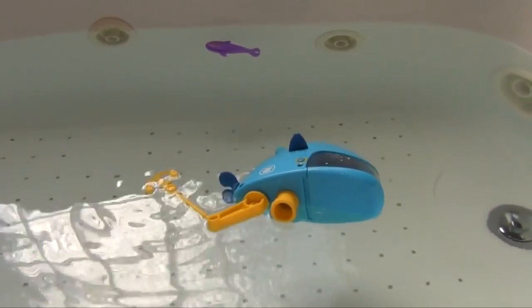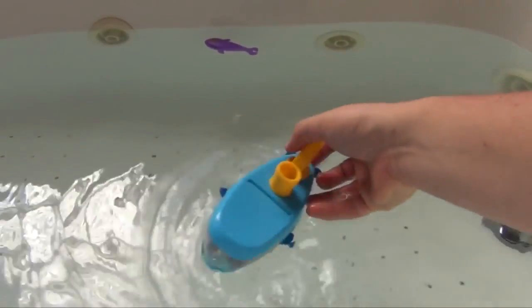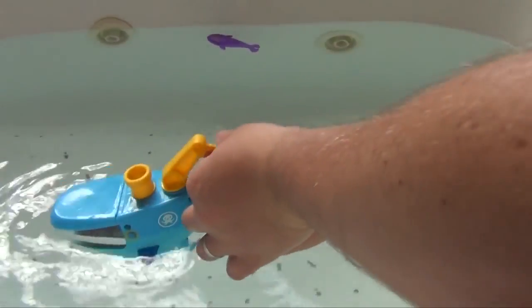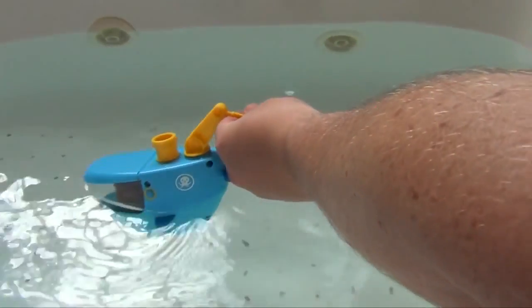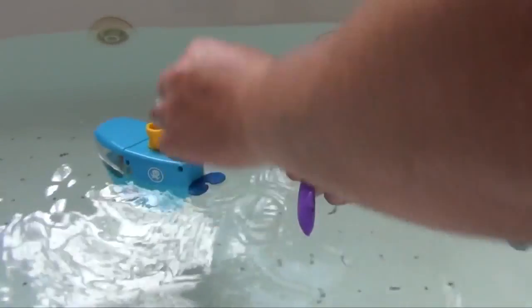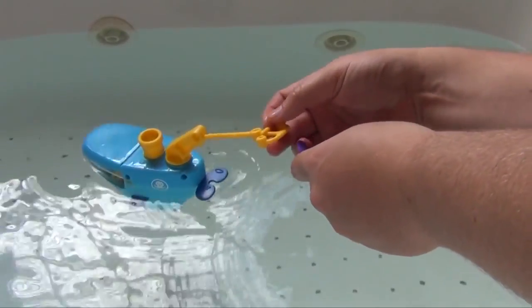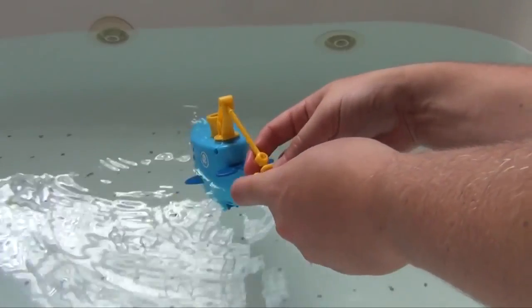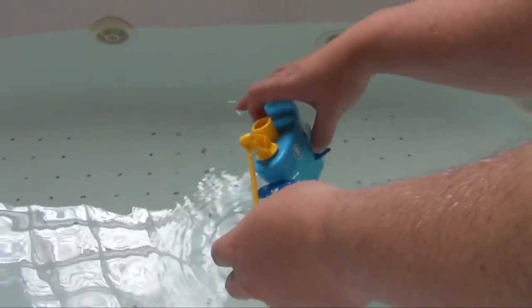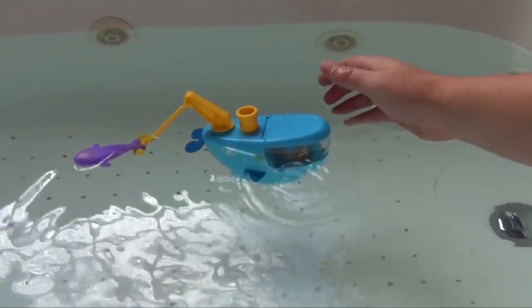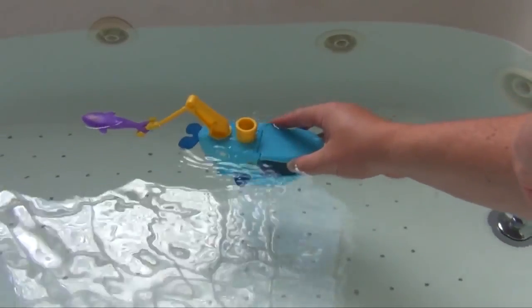So how it works is that you take the Gupsea, and you try to see if you can catch the whale. Okay, so here's the tail of the whale, and that rhymes. And now Shellington can take it back to the Octopod.